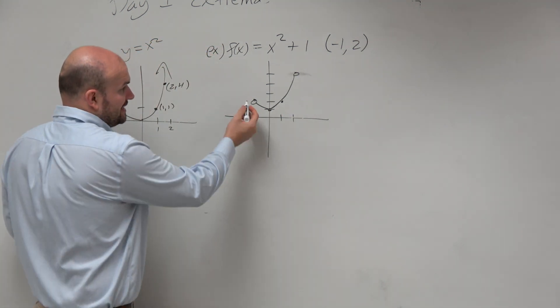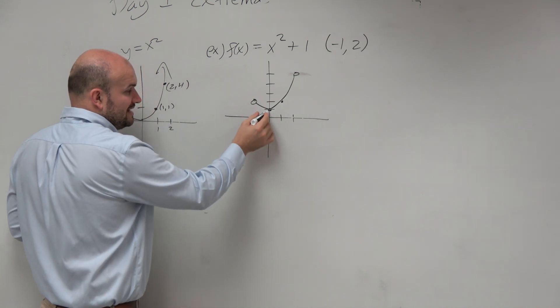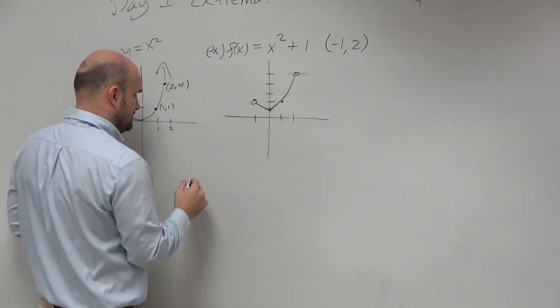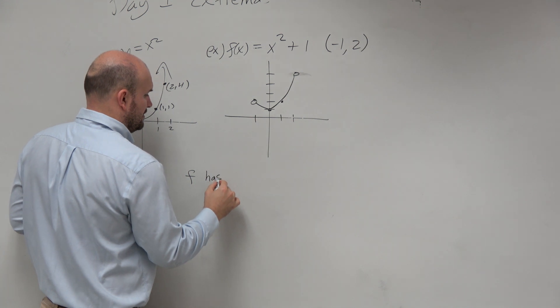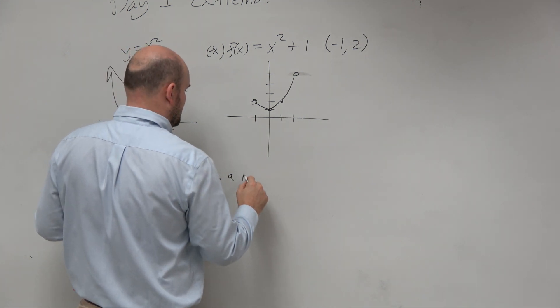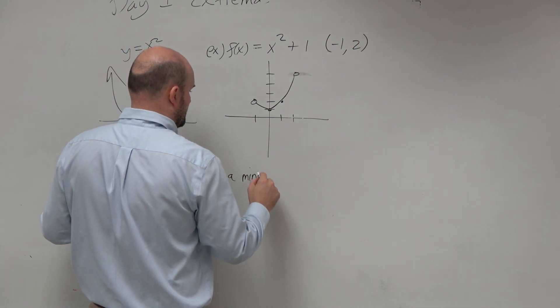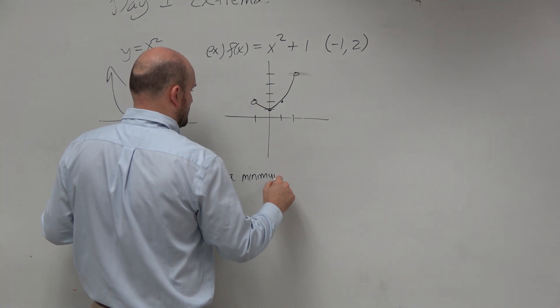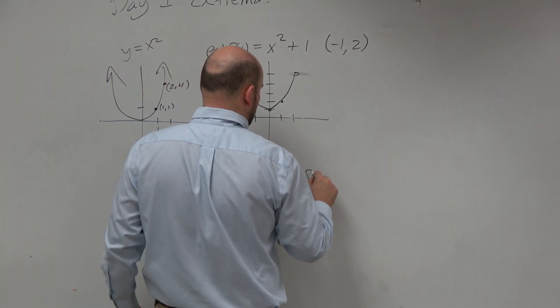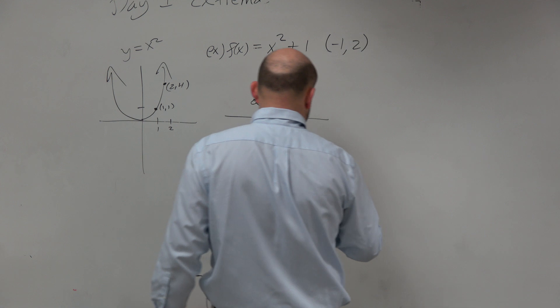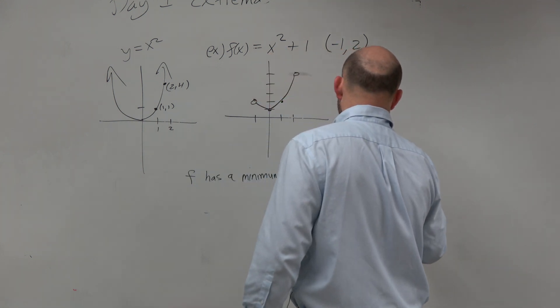So when we're looking at this, we can see here that there's still a minimum here, right? So we can say still f has a minimum of f of 0 equal to 1 at x equals 0.